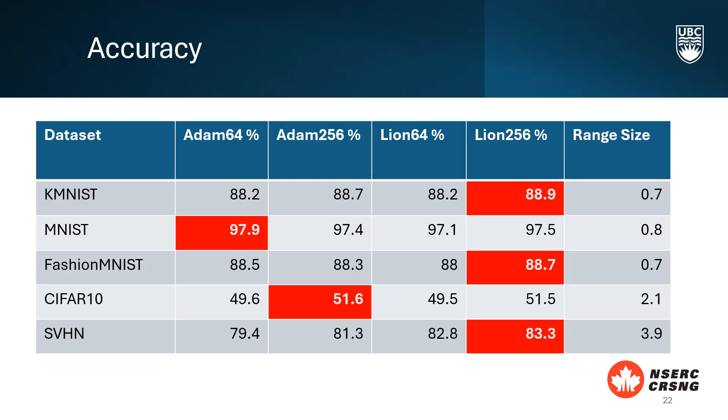This table summarizes the accuracy results for various datasets when using AdamW and LION optimizers with different batch sizes. For KMNIST dataset, LION achieves slightly higher accuracy with larger batch size. AdamW with batch size 64 shows marginally better performance for MNIST dataset.